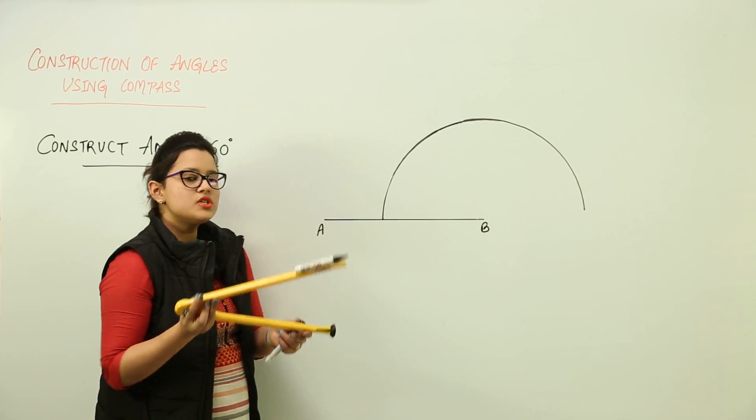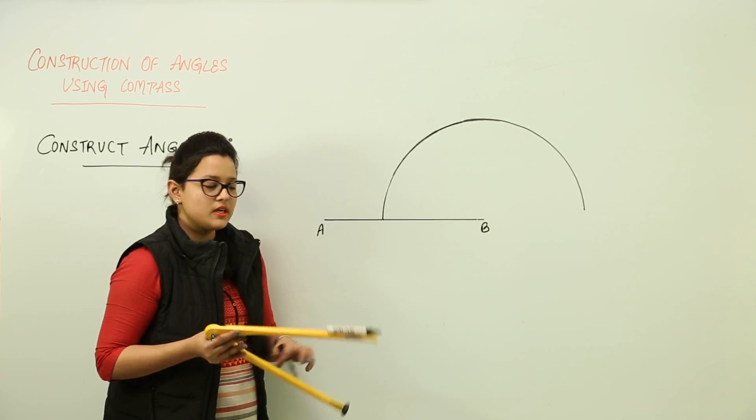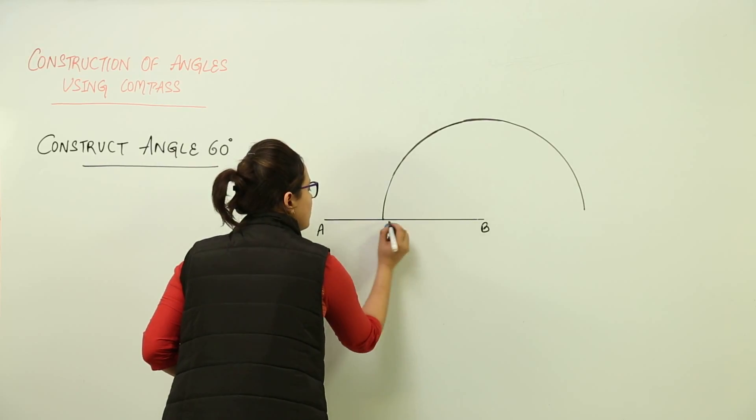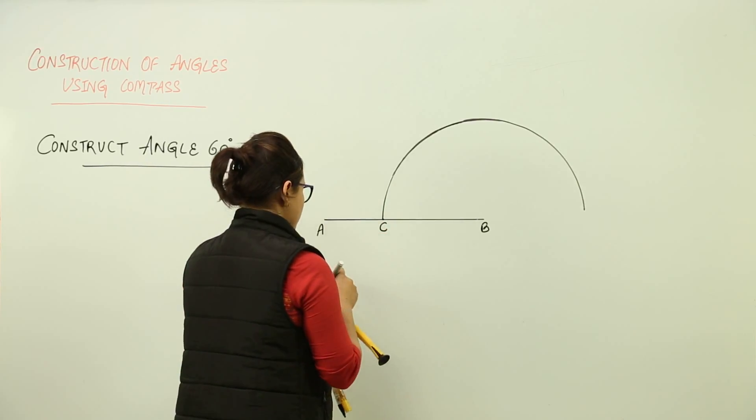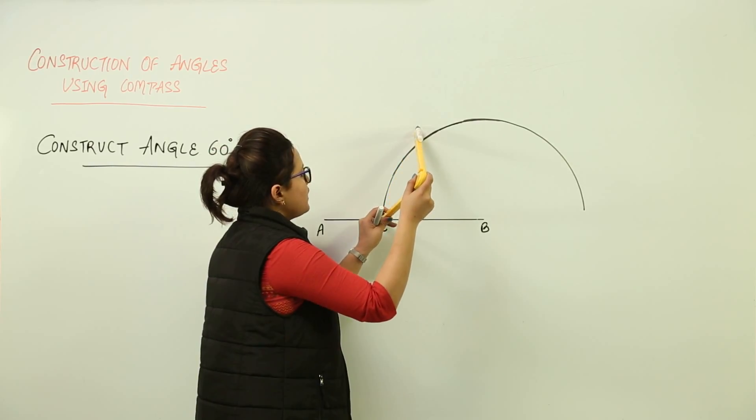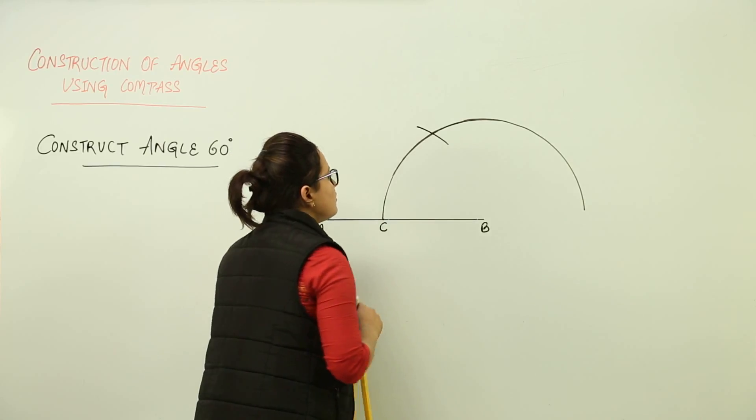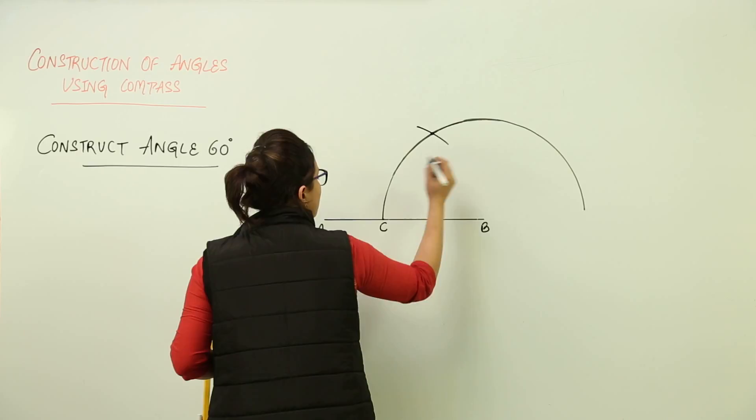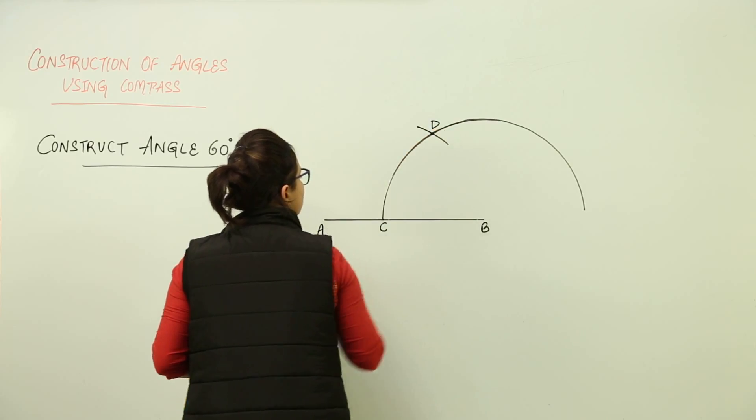Now without changing the compass radius, you will place it on the point of intersection of this arc on line AB, that is at point C. We will place it on point C now and we will cut the arc. The point where this arc is being cut by another arc is point D.